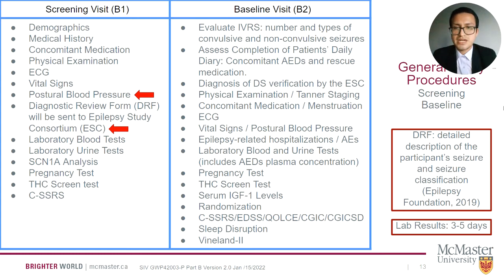The DRF will include a detailed description of the participant's seizures, behavior before the seizure, possible triggers during the event, changes in muscle tone, movement, automatic or repeated, color of the skin, loss of urine or bladder control, alteration of awareness, part of the body involved, and seizure classification. Any patient identifiers need to be redacted.